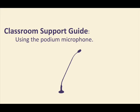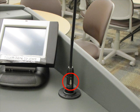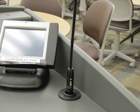In this installment of the Classroom Support Guide, we will show you how to use the gooseneck microphones on the podiums. First, turn on the mic by pressing the gray power button at the base of the neck. A green light above the button will indicate that the mic is turned on.